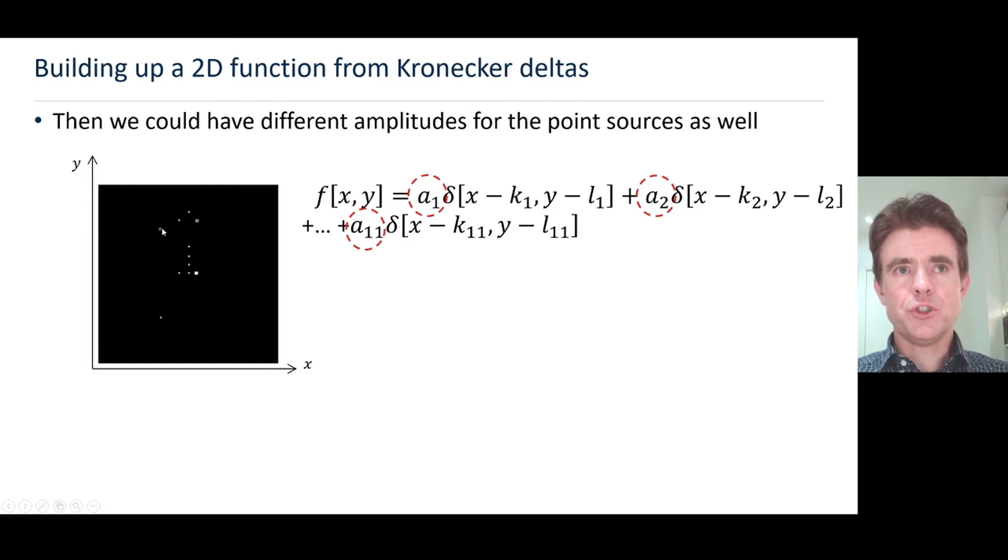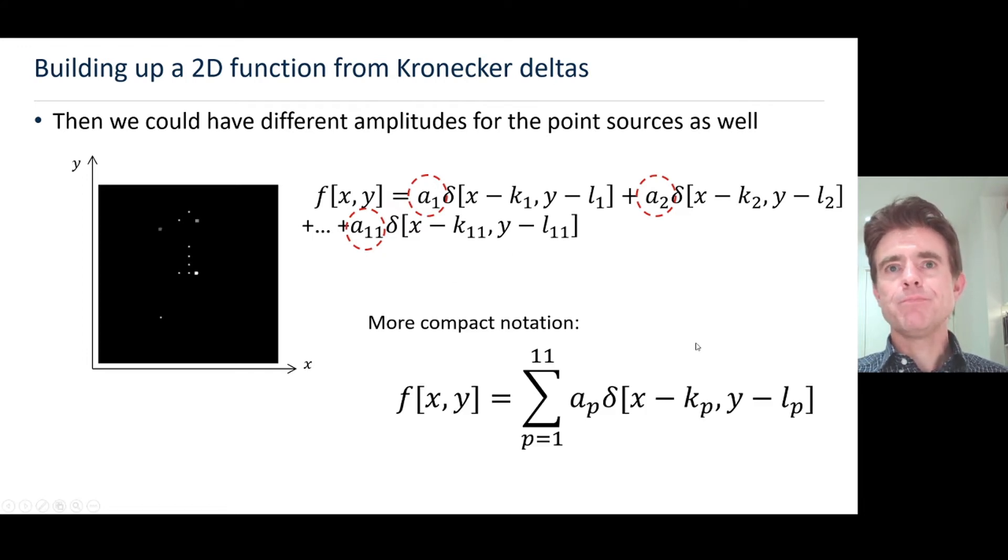More compactly then, for 11 point sources we now have the delta function shifted to the coordinates kp, lp for each of the point sources, and now they have a unique amplitude or coefficient ap. That is the mathematical description of 11 point sources of different amplitudes to make up a 2D image.